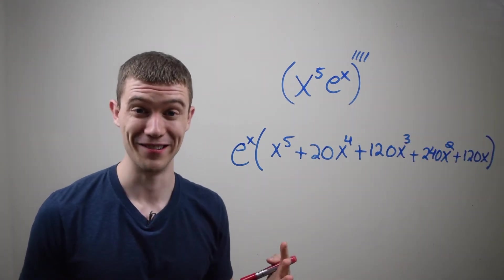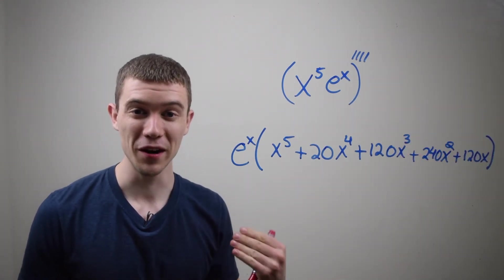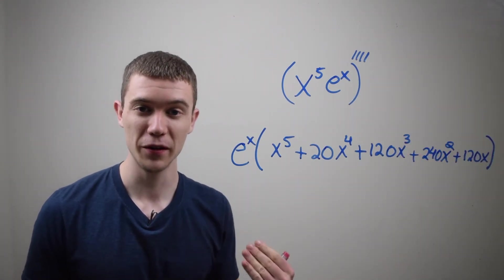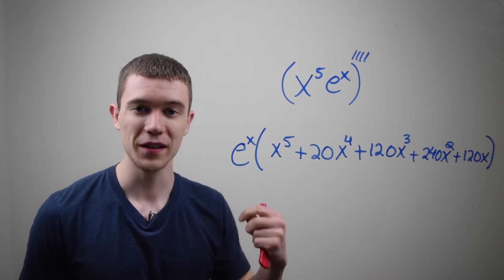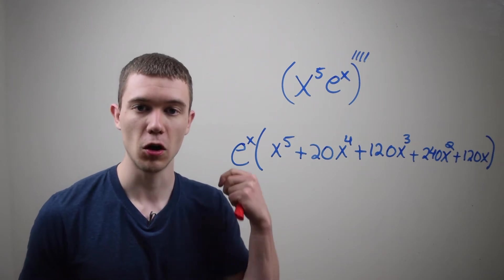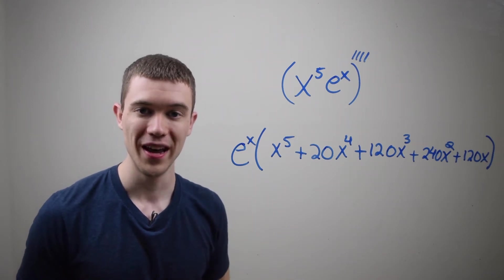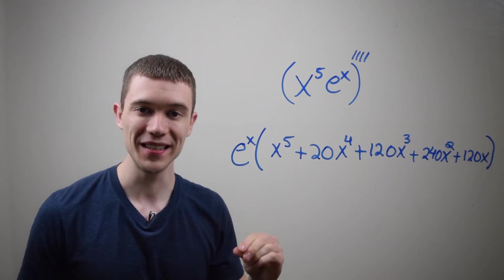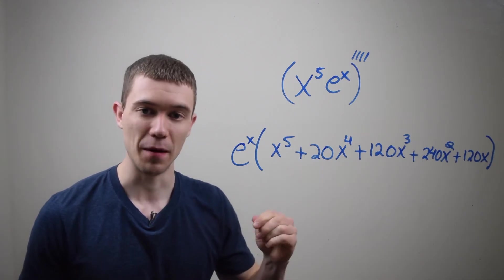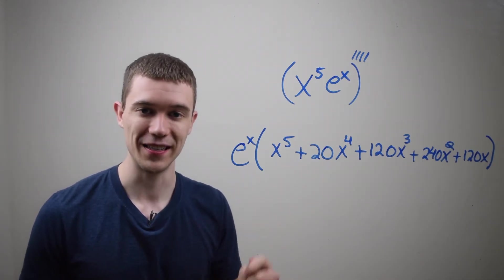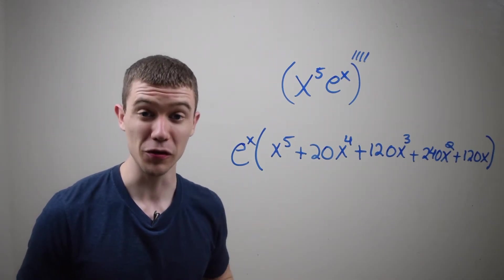That's pretty crazy, right? So where is this all coming from? Well, it's coming from something called Pascal's Triangle, and that's basically a pattern that's very easy to write down.